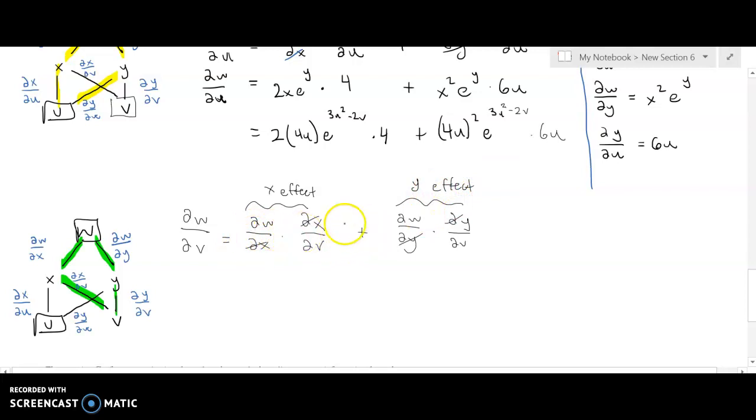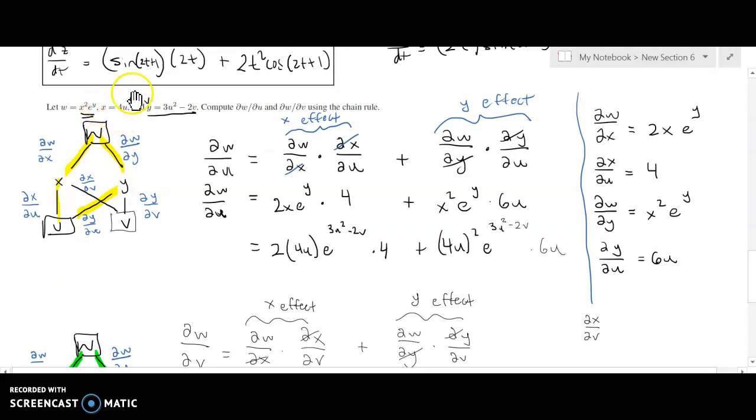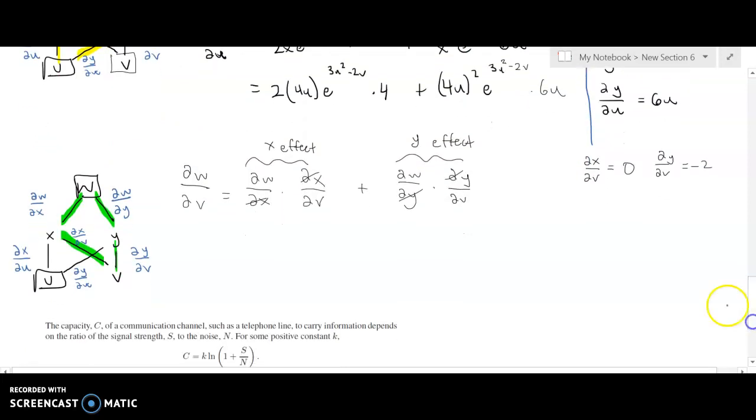So we have these two partial derivatives, those we already knew. We now do need to compute dx/dv. But recall that x does not directly depend on v. x is a function of u. So if you take the derivative of 4u plus 0v with respect to v, remember that 4u is a constant. We're holding u constant here. So the derivative of 4u with respect to v is 0. And then the derivative of y with respect to v is going to be dy/dv. The derivative of 3u squared is 0 because u is constant. The derivative of negative 2v is minus 2. So we can save ourselves a little bit of work here because we know that this whole term is going to be 0 since dw/dx is not 0 but dx/dv is 0. So when you multiply those together, you are going to get 0.